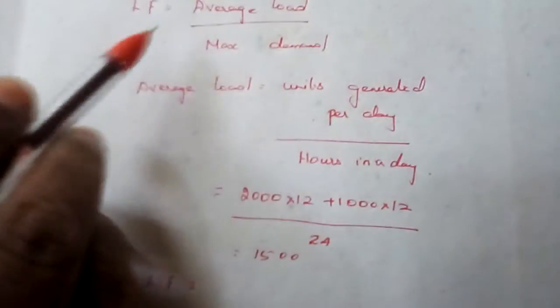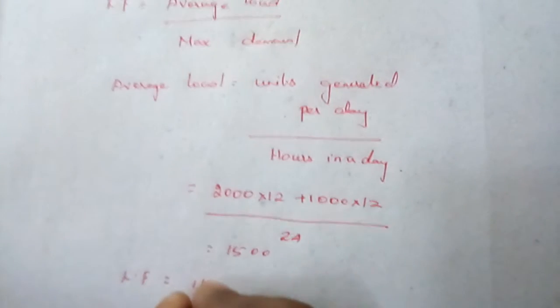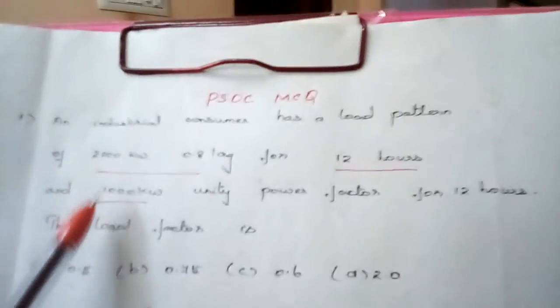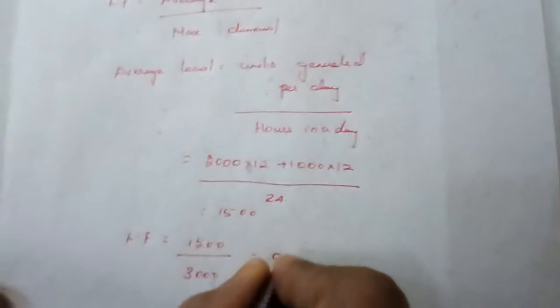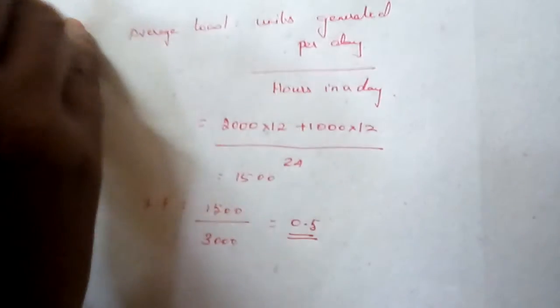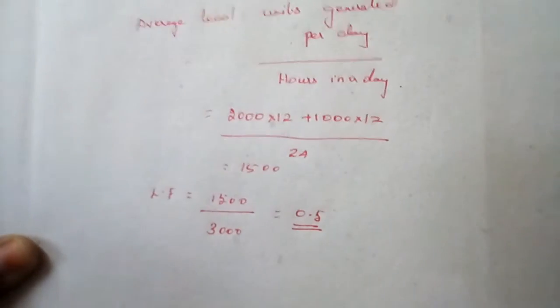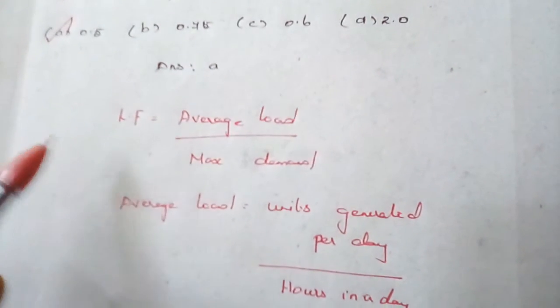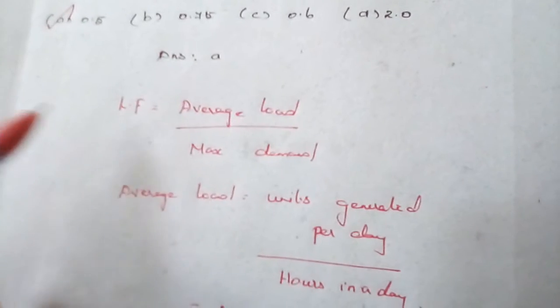The load factor formula is average load divided by maximum demand. Load factor equals 1500 divided by maximum demand. The maximum demand is 2000 plus 1000, which equals 3000, giving a load factor of 0.5. So option A is the correct answer for question number one.